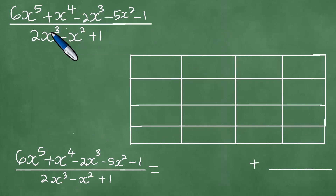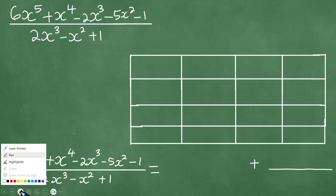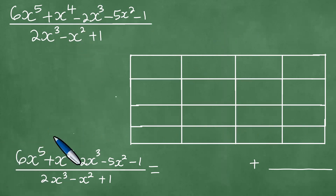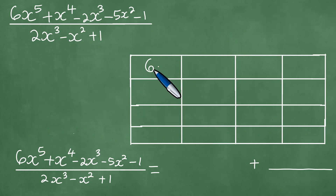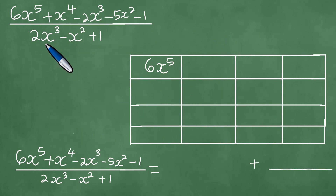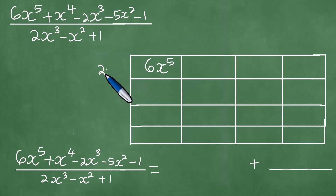We have noted the polynomials we need to divide. In the box method of polynomial division, we take the 6x to the fifth power and drop it into the first block. Then we consider the divisor, and we put here 2x cubed.